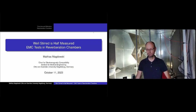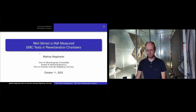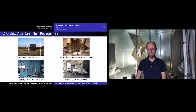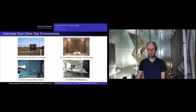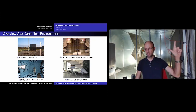Let's start with an overview of the test environments typically used for EMC tests. The simplest one is an open area test site: you take two antennas, put your EUT somewhere in an open space, measure coupling between the EUT and the antenna, and make sure the ground has a nice conductivity.